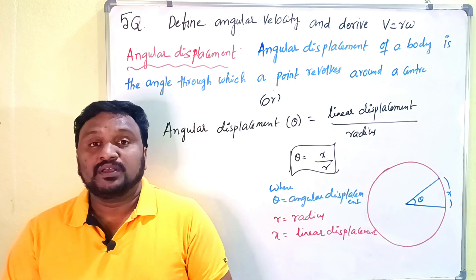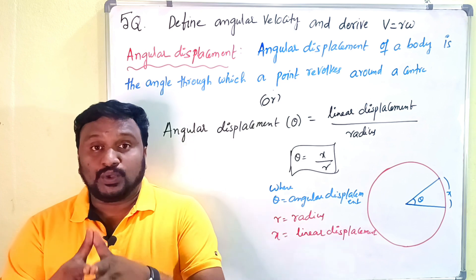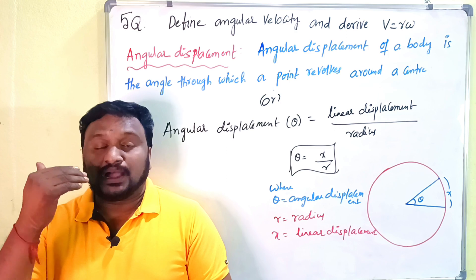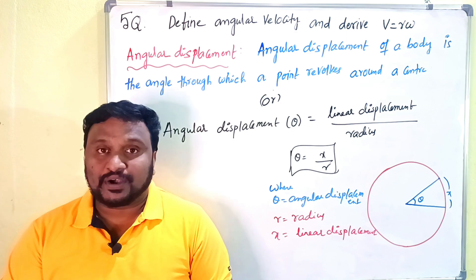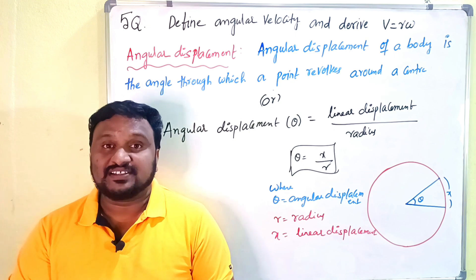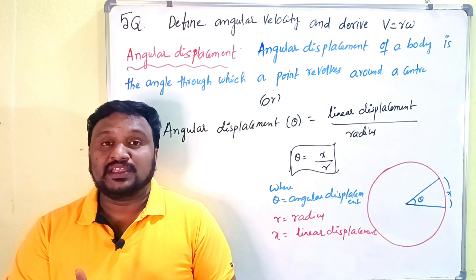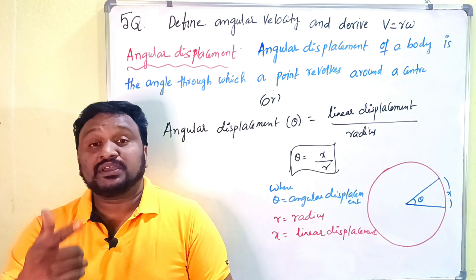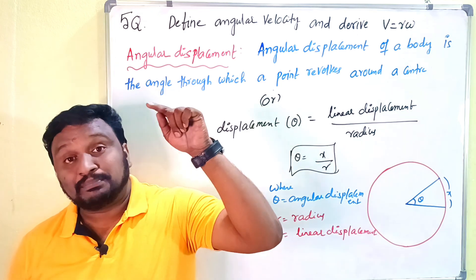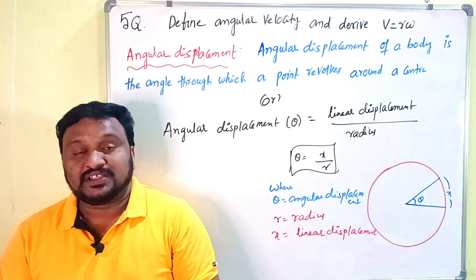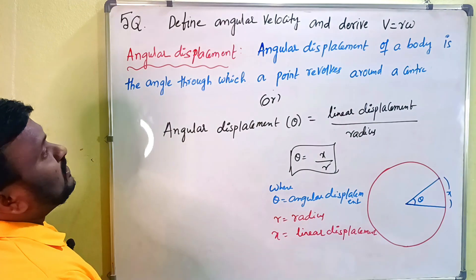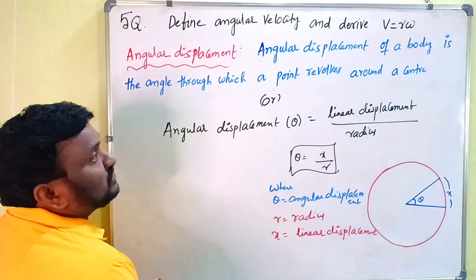Before starting this video, please check the playlist of my channel where I am uploading all the important short answers, very short answers, and long answers for intermediate first year and second year, as well as NEET and MSET bits. So subscribe, follow my channel, and press the bell icon. For IP examinations, the question is: define angular velocity and derive v equals r omega.